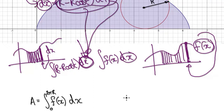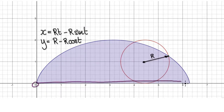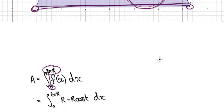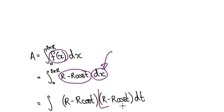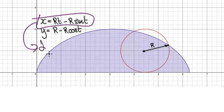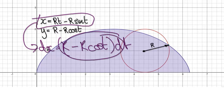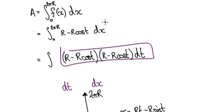So let's start again. To work out the area, we need to integrate from 0 to 2πR, because that distance is the circumference of the circle. Each step of the way we need the height — given by the y parametric expression — and then we replace the thickness dx with R minus R cos(t) dt, which is what we found by differentiating x.